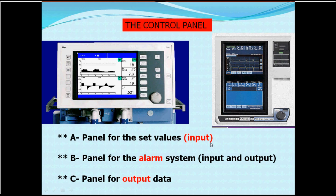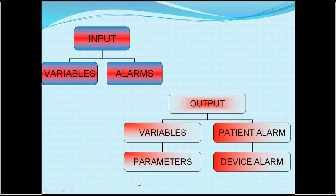The alarm is patient-specific, not a common alarm for all. For example, if the patient's tidal volume is 300 ml, you set an alarm at 250 ml. If the peak pressure is 10, you set an alarm at 15. If it drops to 8, you set an alarm. These values vary according to each patient. The third part is the output data.